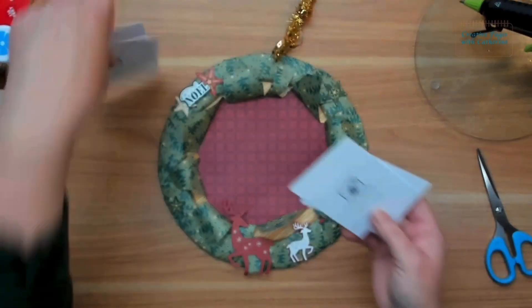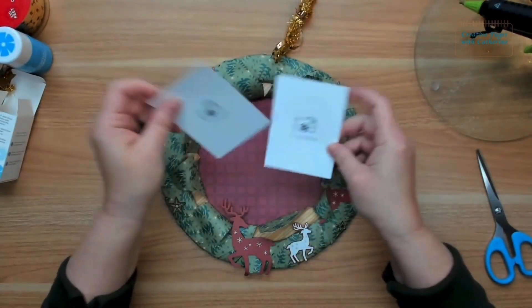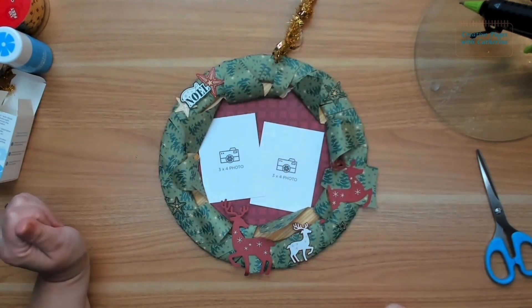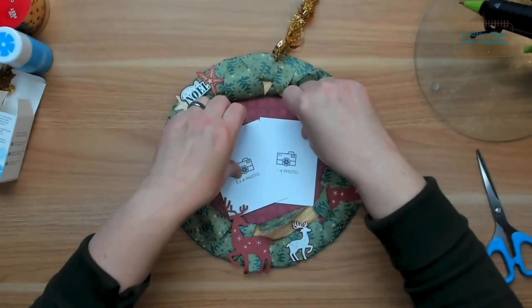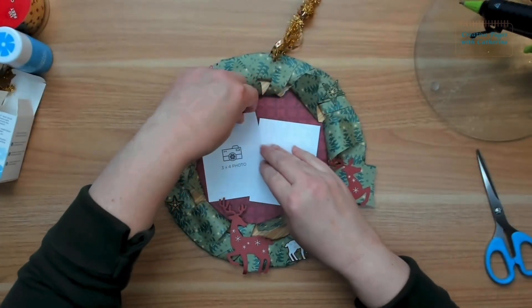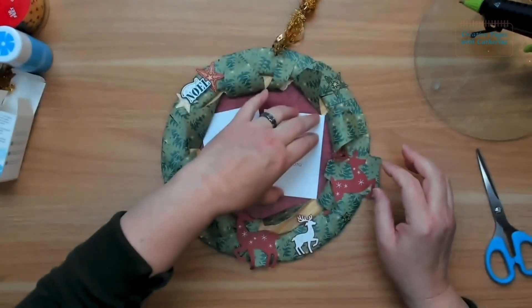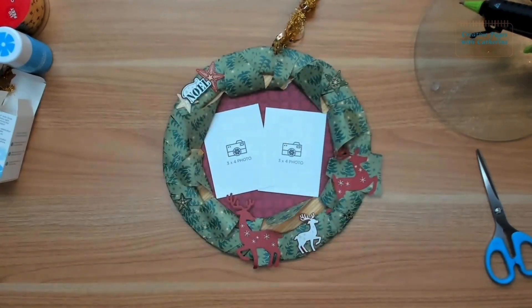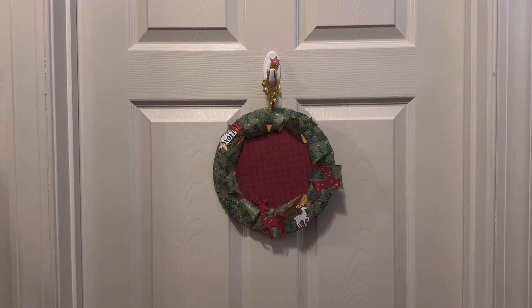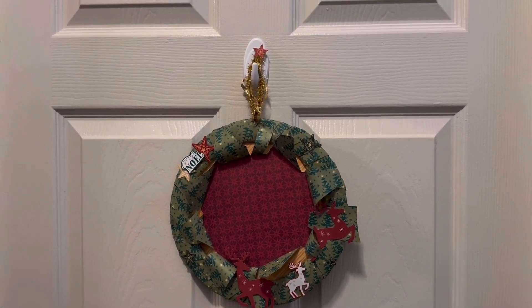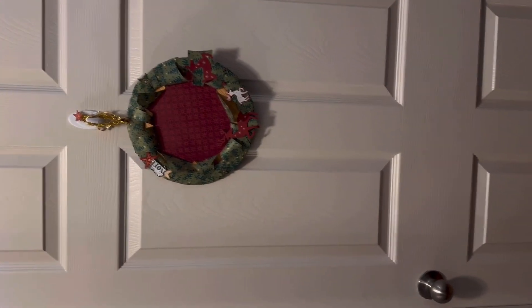First things first, we'll do our red sheet that's going to be the back of our wreath. We're going to use our red blade. Line up your circle on your paper and we're just going to cut our circle for the back of our wreath here. We're also going to need our blue blade as well. The red blade cuts the closest to the circle, the green blade cuts kind of in between, and the blue blade is the furthest from the circle.